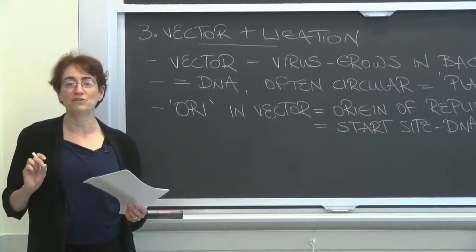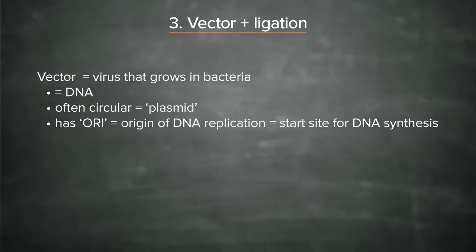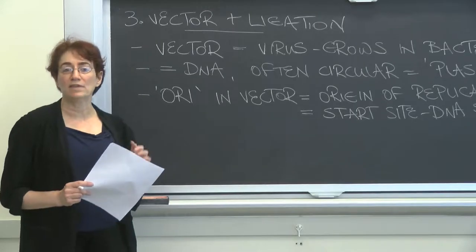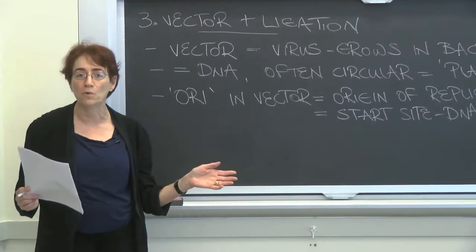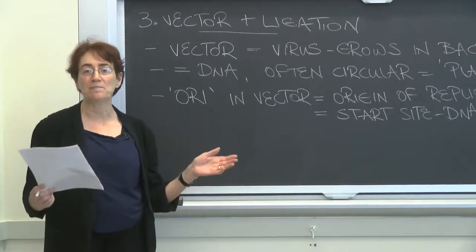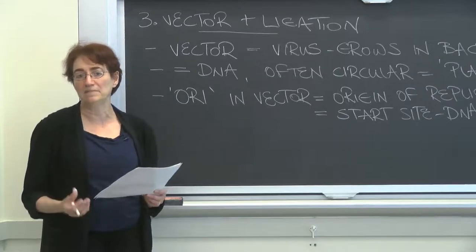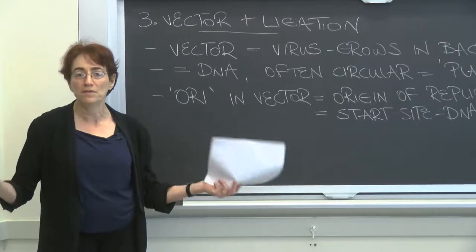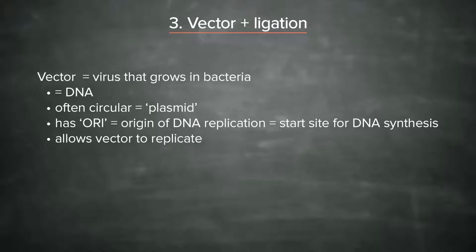Now you've heard of them, you can add that to your compendium of knowledge about DNA synthesis in general. This origin of replication allows the plasmid to replicate within the bacterial host cell to very high copy number — 10,000 copies or more. And because you can grow billions and billions of bacteria without too much difficulty, you can end up with very large amounts of DNA, grams or even kilograms, of DNA from the right amount of bacteria growing the viral vector. So the origin of replication allows the vector to replicate to something like 10,000 copies per cell, and that will give you lots of DNA.